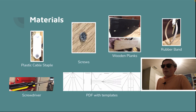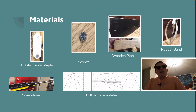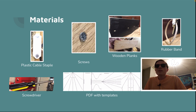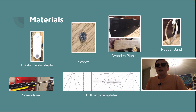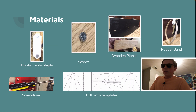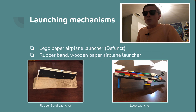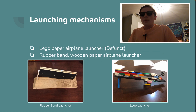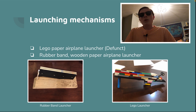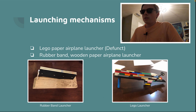Here were the materials. Describing the process of how I made this would be a lot harder to explain. Basically what I did was I took four wooden planks, used one as a base, and disaligned two of them to create a track of sorts. I used a plastic cable staple to hold a rubber band in place that would pull back and launch the paper airplane forward. This took multiple iterations — I used a Lego paper airplane launcher which is defunct, and also a rubber band wooden paper airplane launcher which ended up working for me.